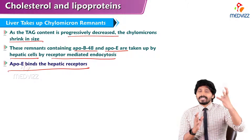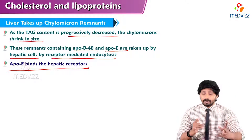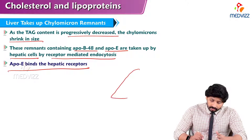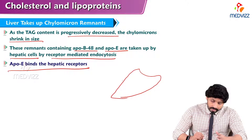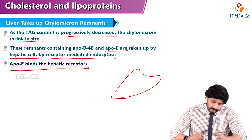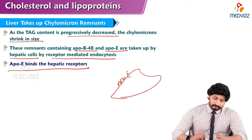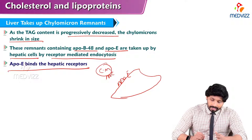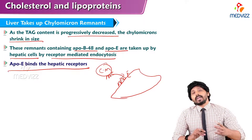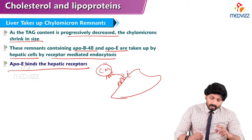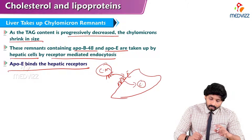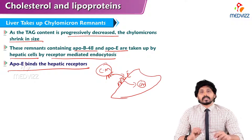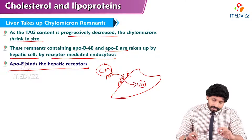How does the liver recognize that this is a chylomicron? On the liver surface there are ApoE receptors. ApoE is already present on top of the chylomicron, so it goes and binds to the ApoE receptors on the liver and enters inside the liver cells, then it will be degraded.